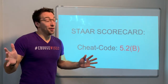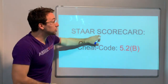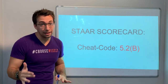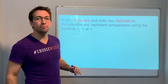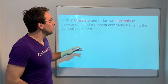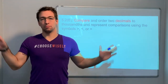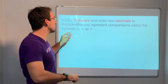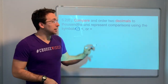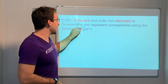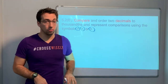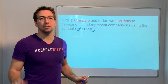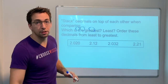Hey friends, here we are — STAAR scorecard cheat code 5.2b. What is 5.2b? We have to compare decimals, simple as that. You have to be able to know: is it greater than, is it less than, or is it equal to?